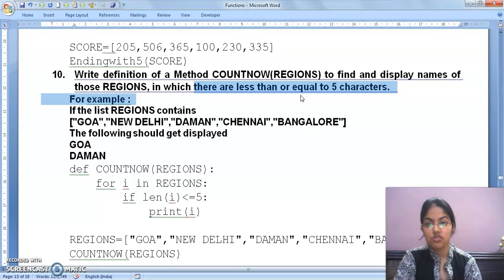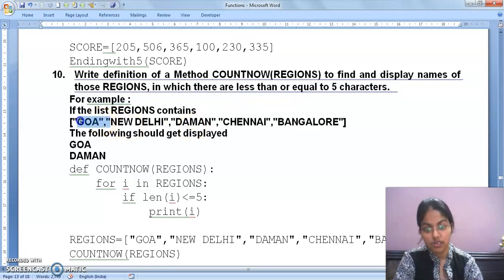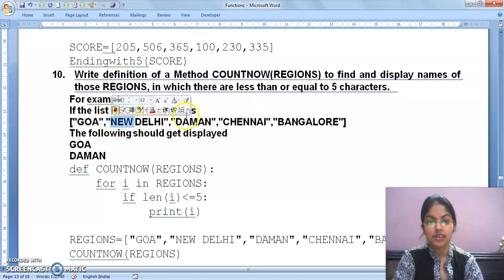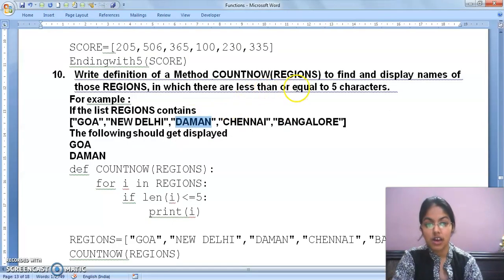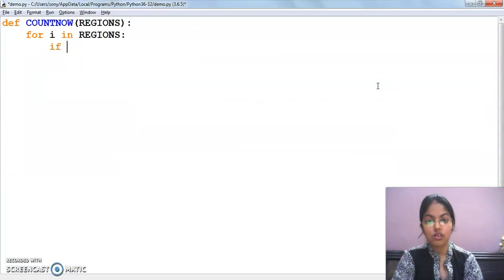So I must apply loop region to region. That means for i in regions. Then I will select the first value, then second, then third. The value of i will check if len(i) is less than or equal to 5. Now you know that if I want to do the length check, the characters check, the function will be len. So I will apply this to the name of regions.